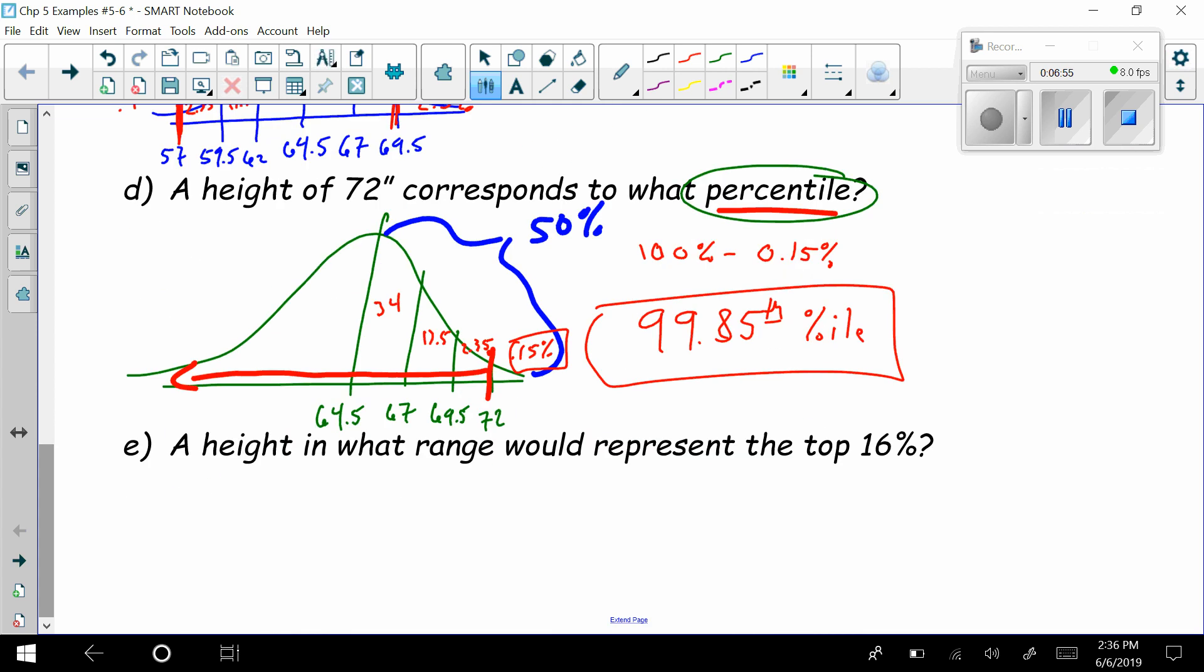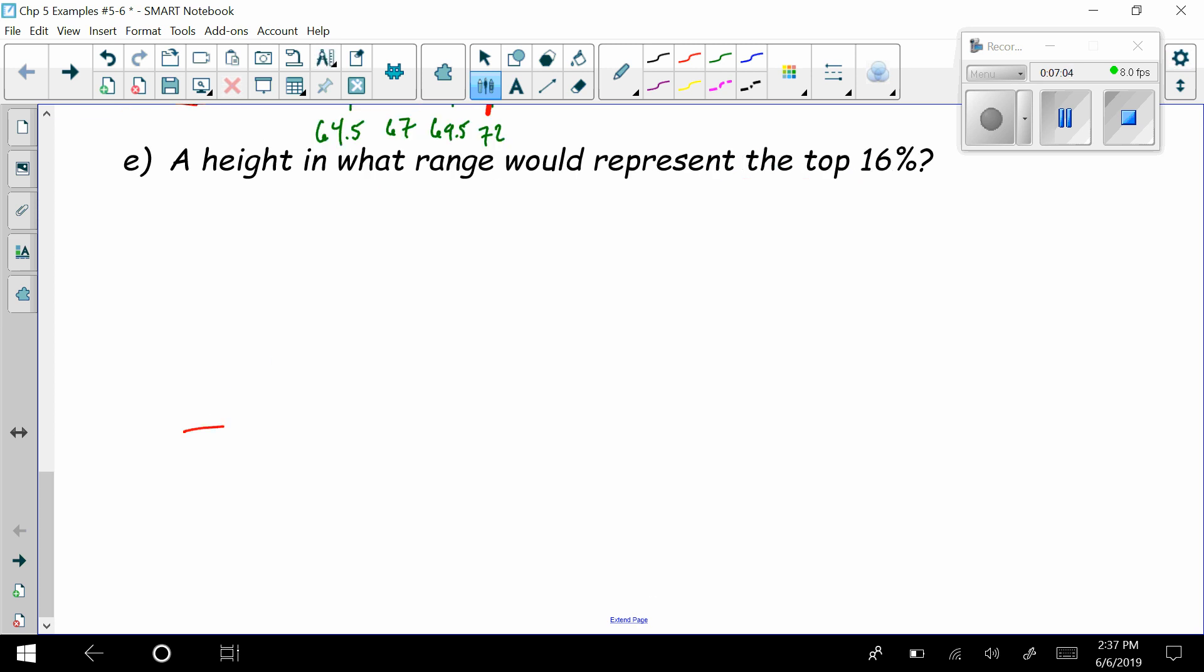Now, a height in what range would represent the top 16%? Again, don't let this intimidate you. Draw a picture right away. We know the middle's here. It says top 16%, so I am thinking about a line somewhere out here, and I want this shaded part right here to be 16%.